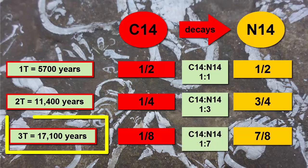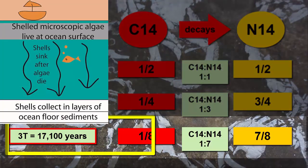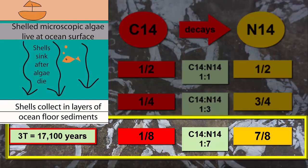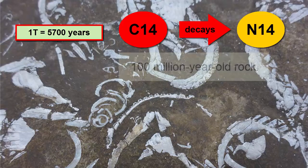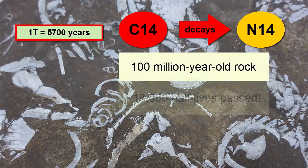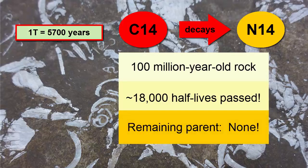At this point, three half-lives have passed, and the time is 5,700 times 3, or 17,100 years. A shell that was buried 17,100 years ago would have a carbon-14 to nitrogen-14 ratio of 1 to 7. If we are trying to use the carbon-14/nitrogen-14 radioactive decay pair to date a rock that's 100 million years old, there likely will not be enough parent left to measure, and that would not be a good choice.